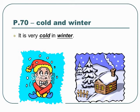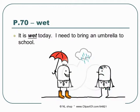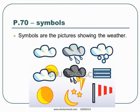Autumn — it gets cooler in autumn. Cold and winter — it is very cold in winter. Wet — it is wet today; I need to bring an umbrella to school. Symbols are the pictures showing the weather.